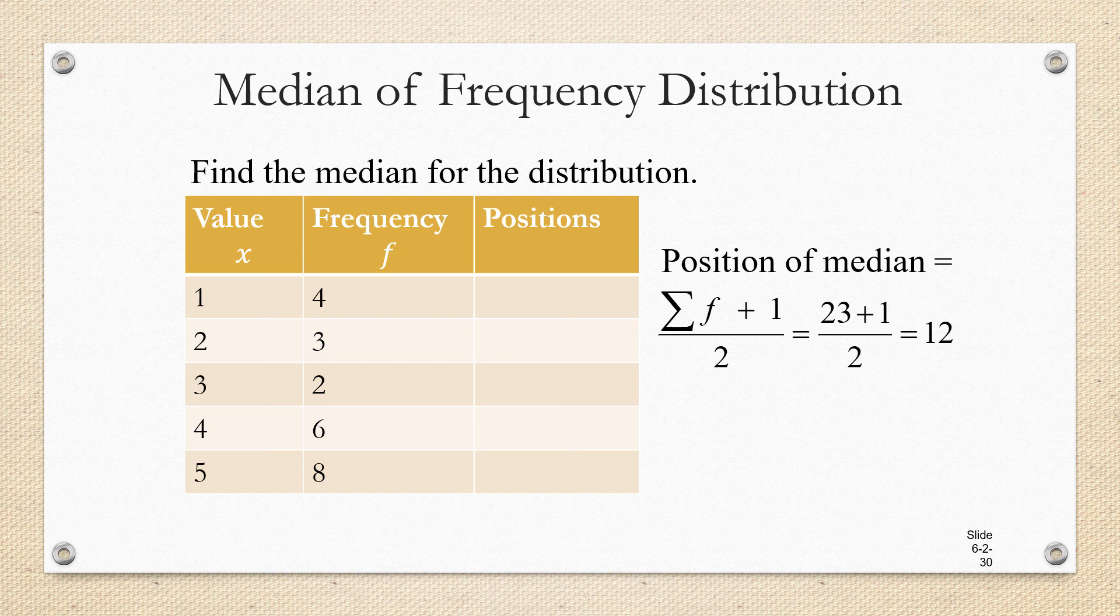I'm going to add a column to the frequency distribution to summarize what the positions are for each data value. For example, the data value 1 occurs 4 times. So it's going to be in the 1st, 2nd, 3rd, and 4th positions. The data value 2 occurs 3 times. So that's going to be in the 5th, 6th, and 7th positions. The data value 3 occurs 2 times. If you add 7 and 2, you get the 9th position. So that's one way of skipping to the fact that the data value 3 will be in the 8th through 9th position.